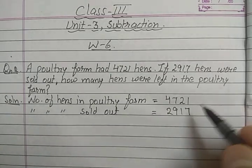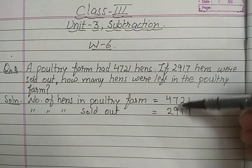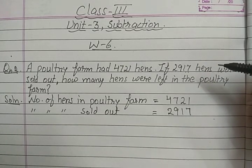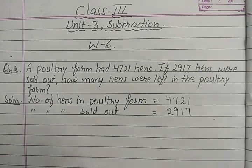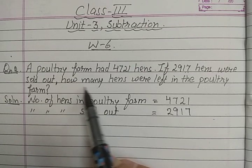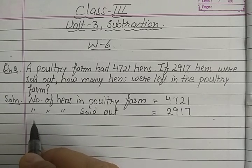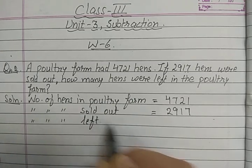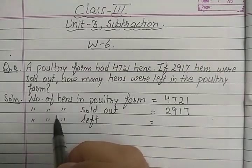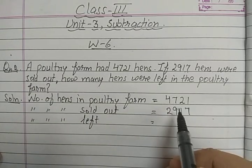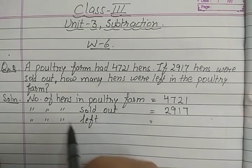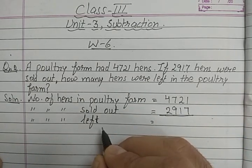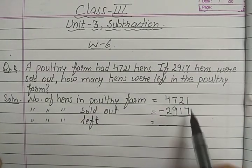Keep in mind: ones must be written under ones, tens under tens, hundreds under hundreds, and thousands under thousands, so that when we subtract we get the correct answer — otherwise we will get the wrong answer. The question asks how many hens were left, so we write: number of hens left — that is what we have to find. 'Left' is a keyword for subtraction, so we subtract.